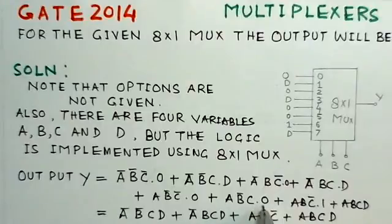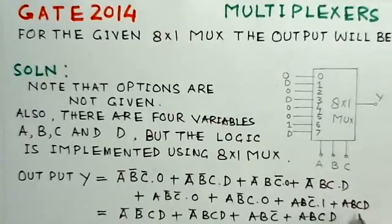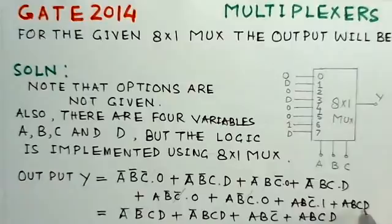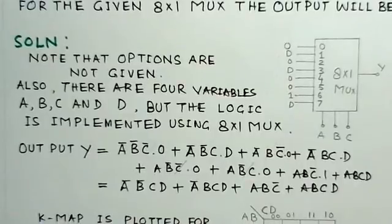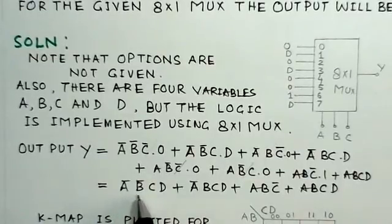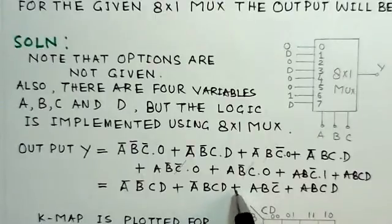A B bar C zero, A B bar C zero, A B C bar one, and A B C D. So those with zero will go away. The terms which are remaining here are the terms like A bar B bar C D, A bar B C D, plus A B C bar, and A B C D.